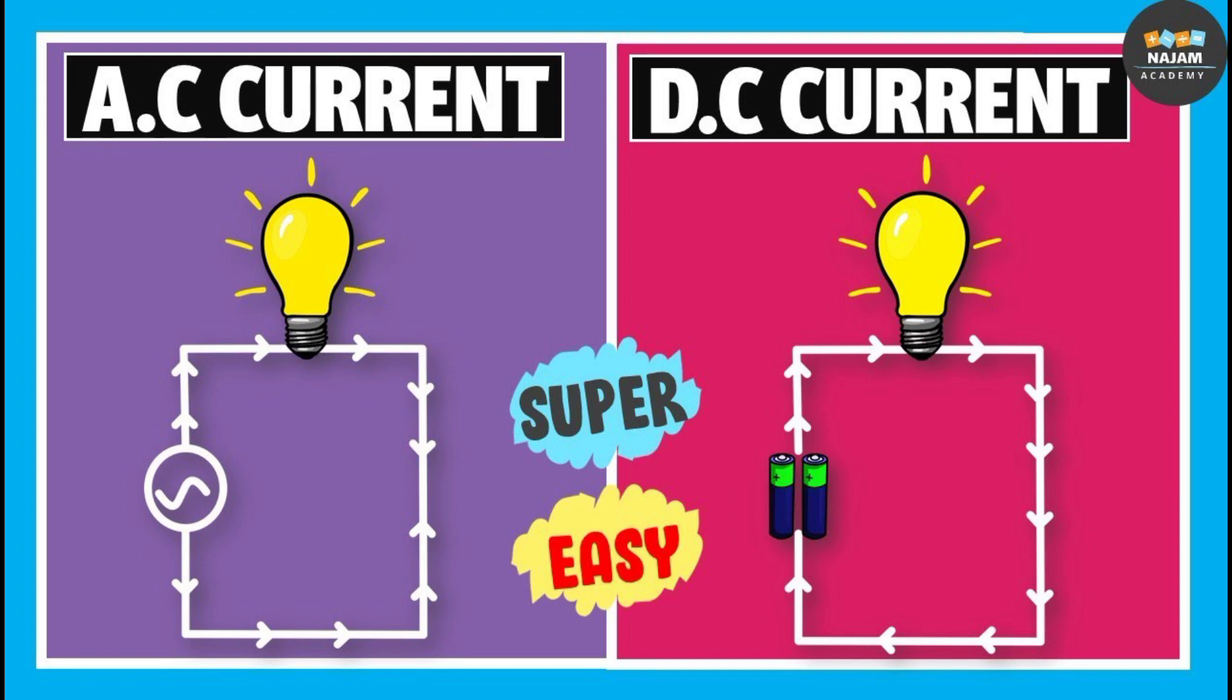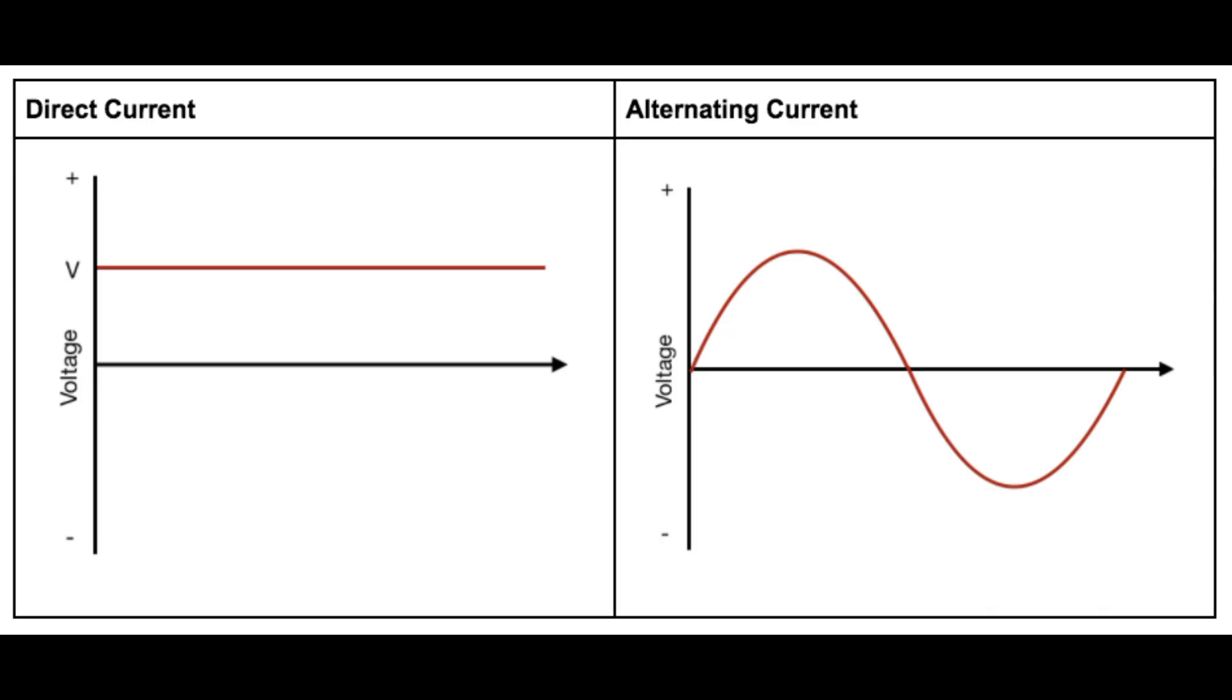It can be direct current. It started in a cyclical way. Now this is the electrical wave.